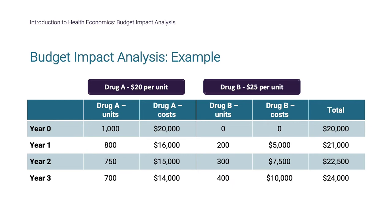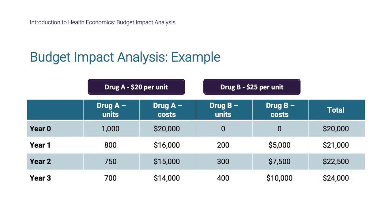For example, if the new product had fewer side effects or fewer contraindications. Compared to the reference year zero, the additional spending on this disease area can be seen in the total spending column. As more patients switch to or begin the new, more expensive drug, the budget implications can be calculated. This simple example shows how BIA helps to inform budgets.